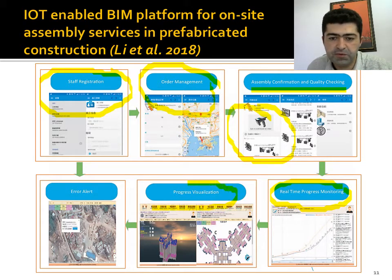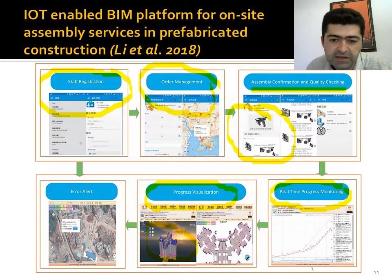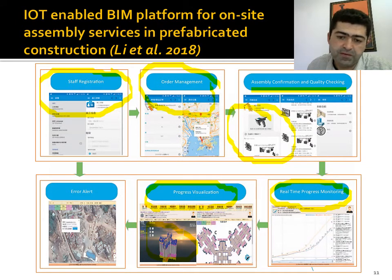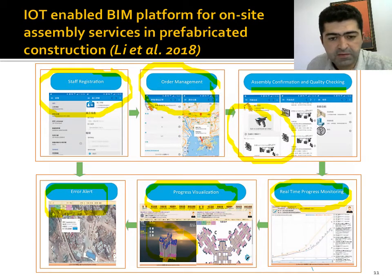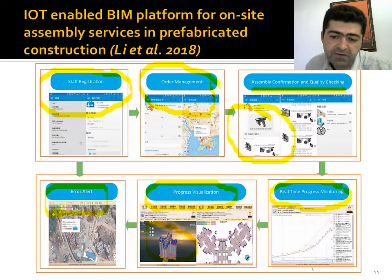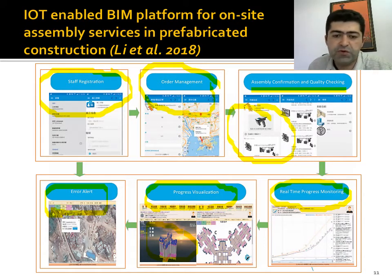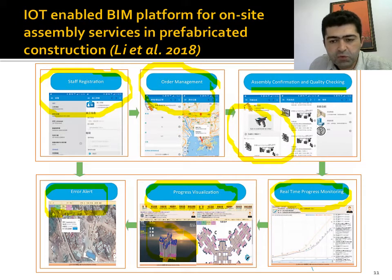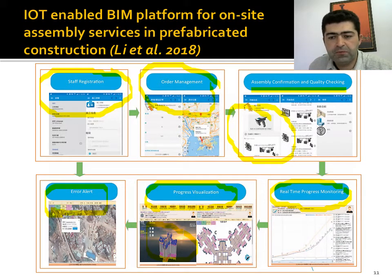In the progress visualization module, they implemented a BIM model integrated with the system to see the positions of the assembly products. In the error alert module, the system allows users to see whether an assembly product is in the right position using GPS coordinates. If there are any misalignments or errors, the system raises alerts to inform users. The overall system integrates the whole assembly flow and process in one technological implementation.